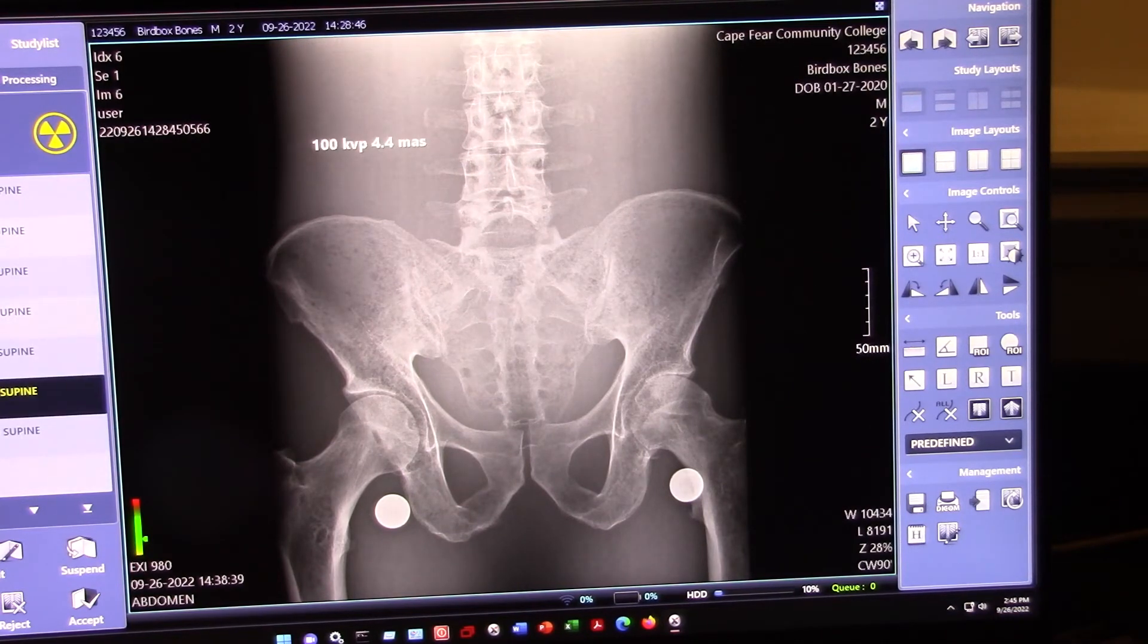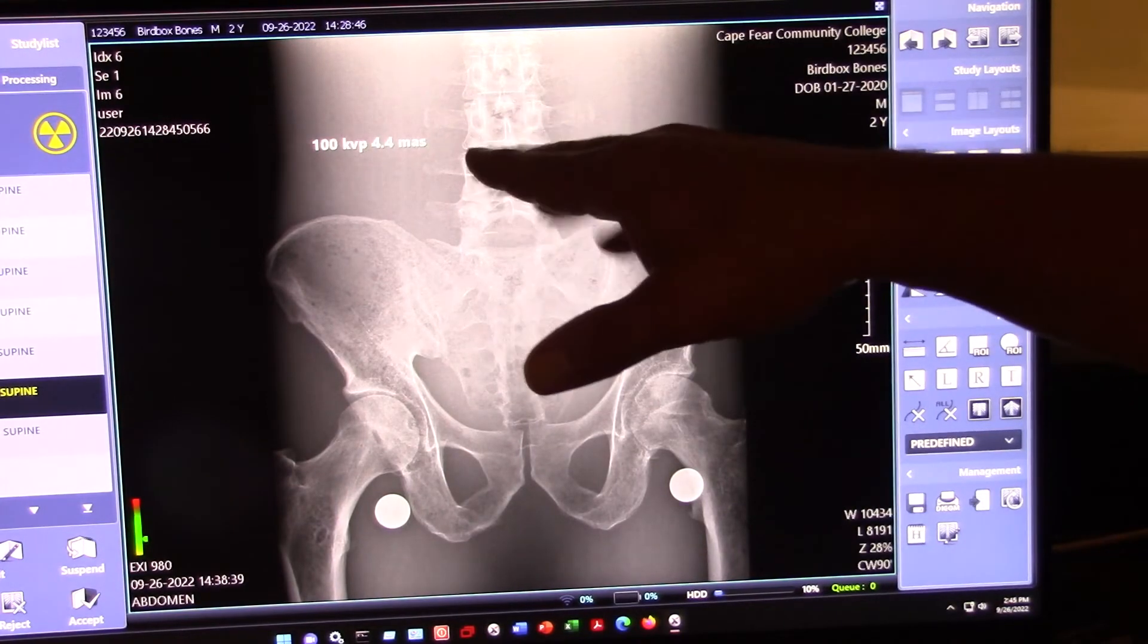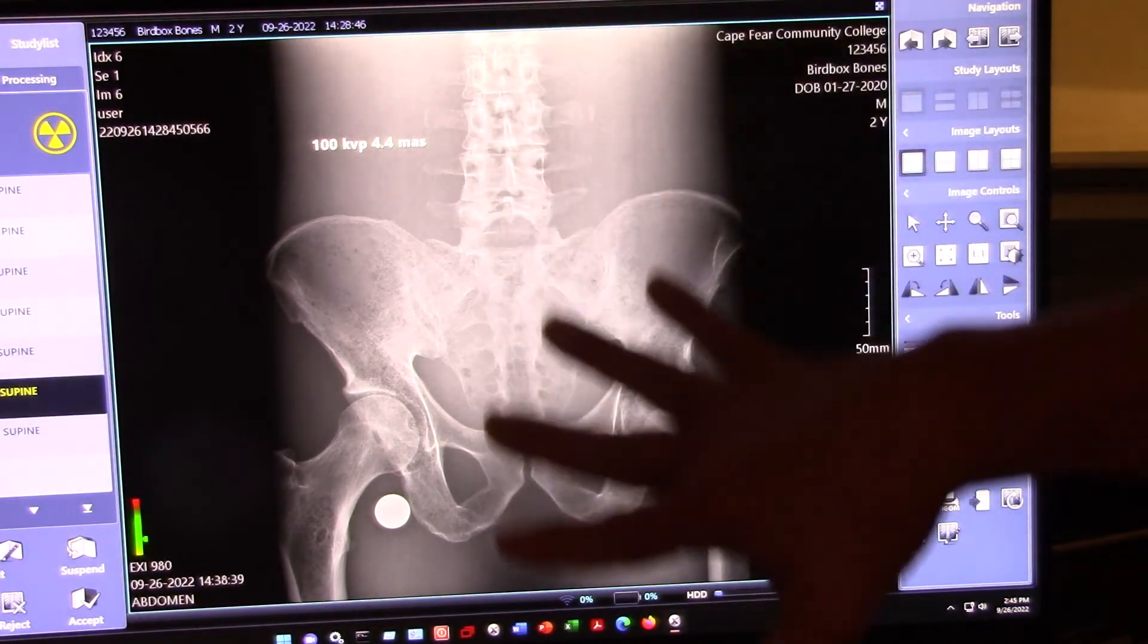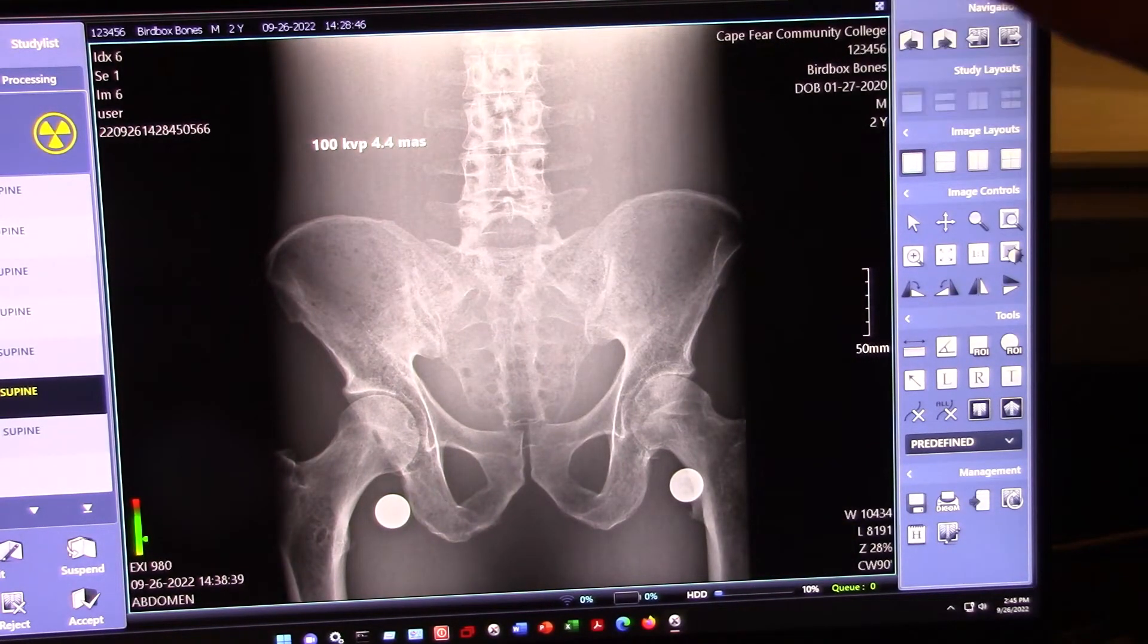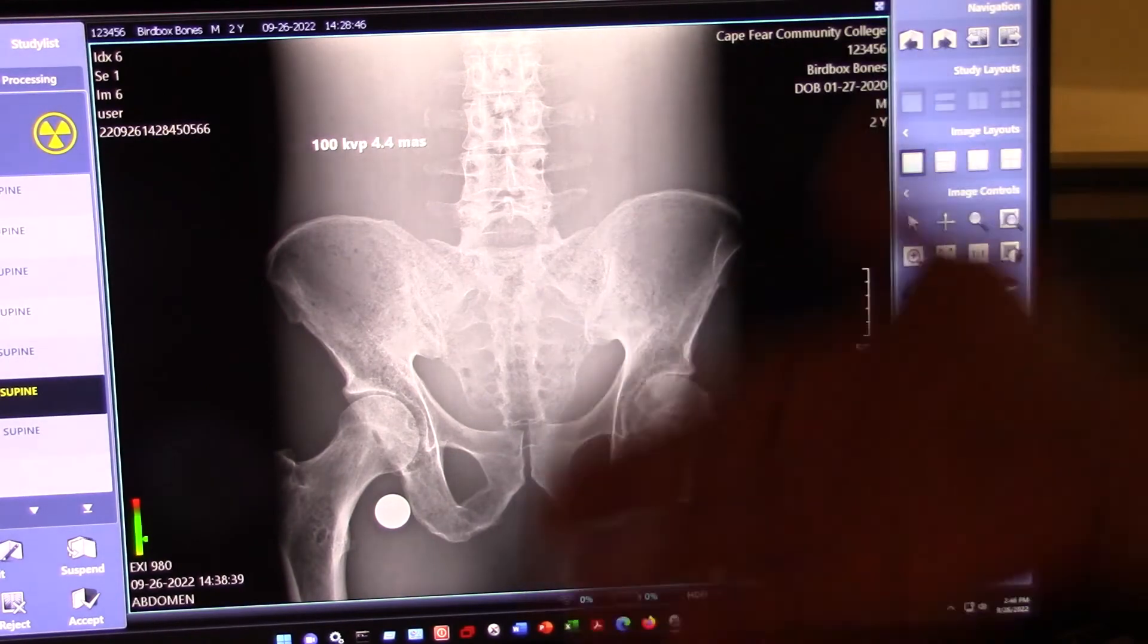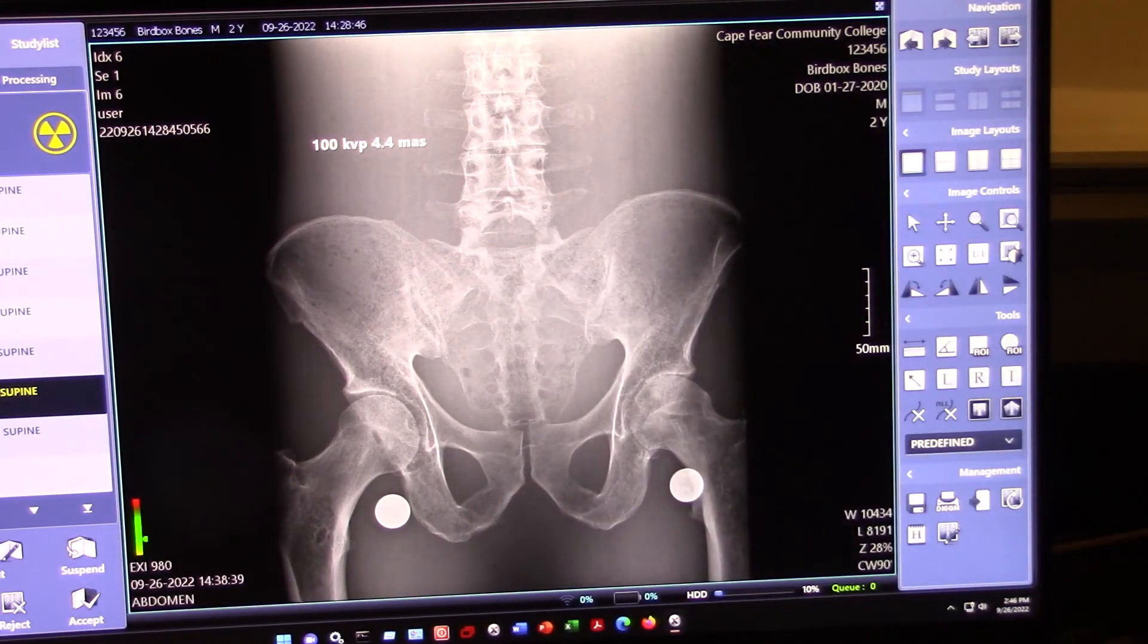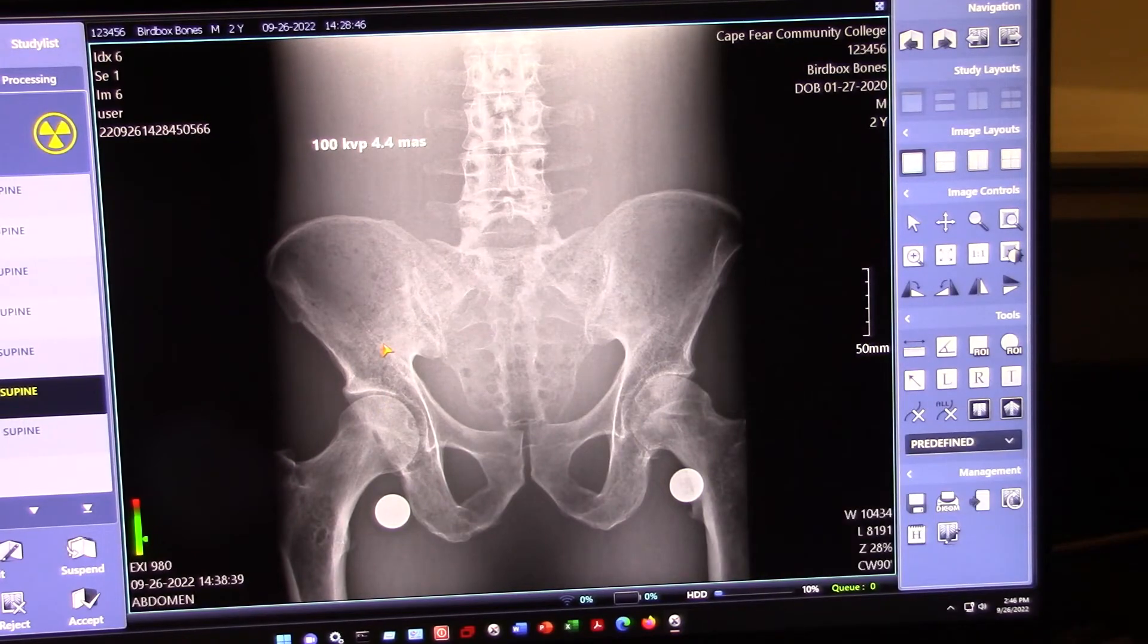Then we go to 100. Not that big of a difference, but you can definitely see we've lost some contrast. So, everything is starting to look more washed out. We don't have the strong delineation between one tissue border and another. We can still get away with it, though. Can we do abdominal radiography at 100 KVP? Yeah, sure, we can. Especially if it's a good-sized patient.